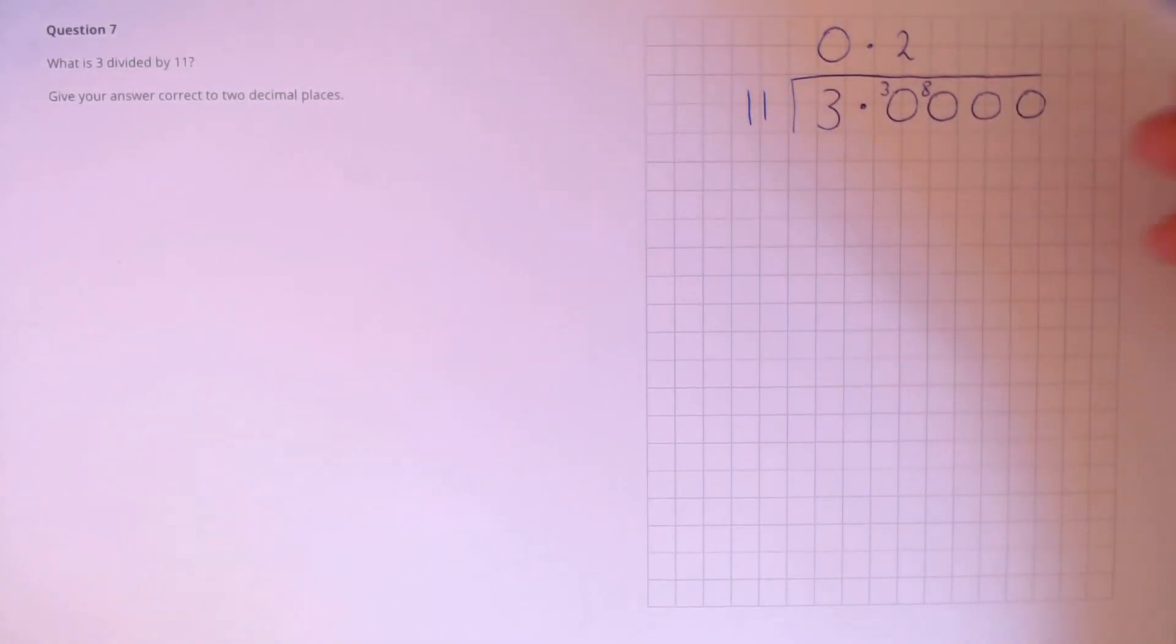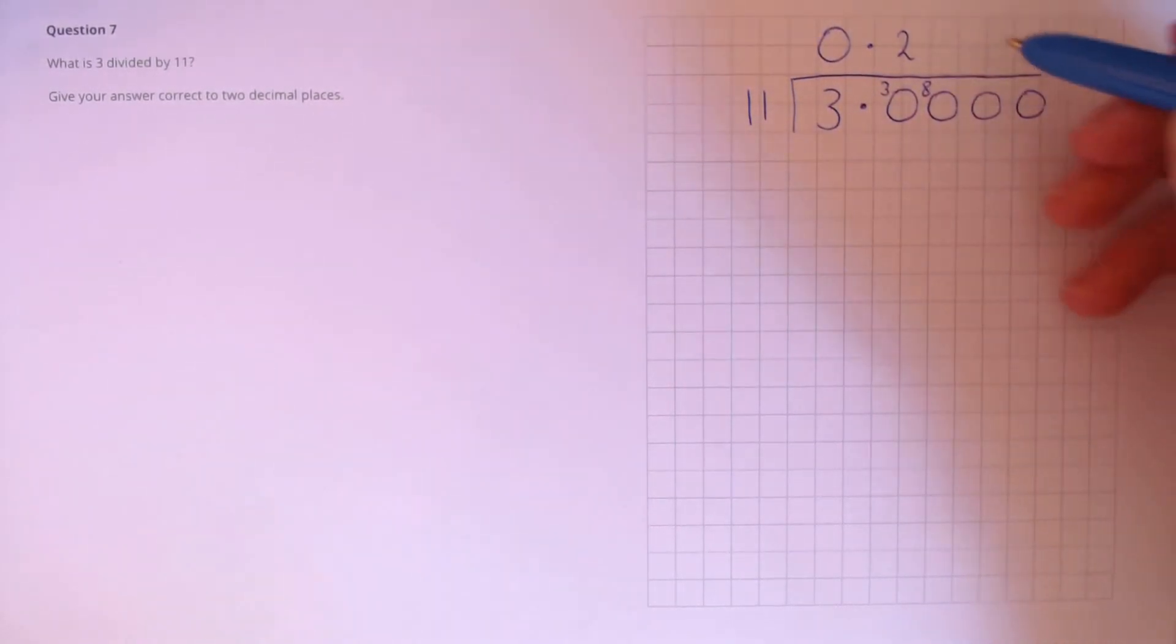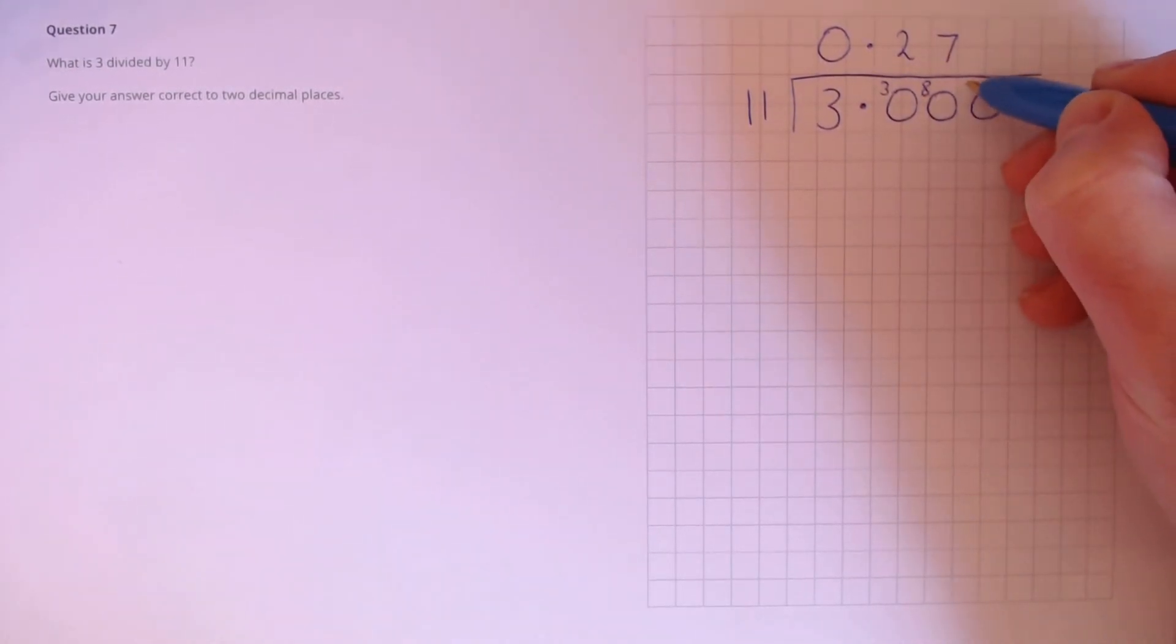80 divided by 11 is 77 with the remainder. So 77 is 7 lots of 11 and remainder 3.